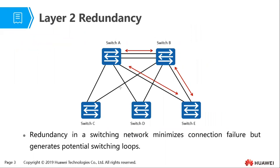The main problem with layer two redundancy is that it generates what we call switching loops. They minimize connection failure, which is a big advantage, but they generate switching loops. So what are switching loops?